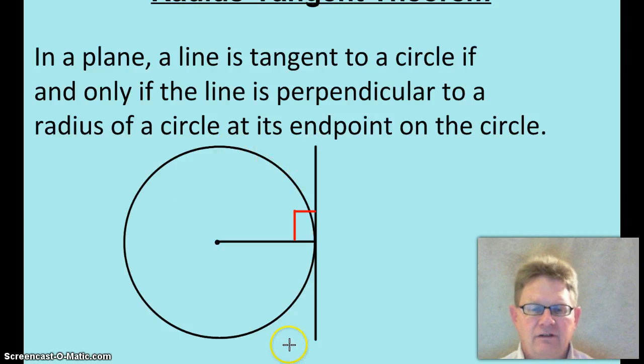So, if you know a line is tangent, then that line will be perpendicular to the radius at its end point. Or, if you know a line is perpendicular to a radius at its end point, then that line will be tangent. That if and only if is a biconditional. So it could go hypothesis or conclusion first, depending.